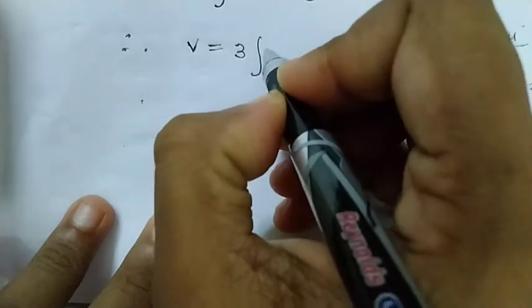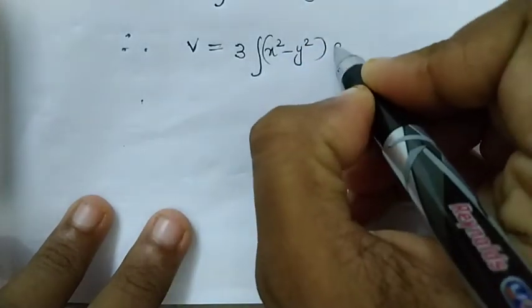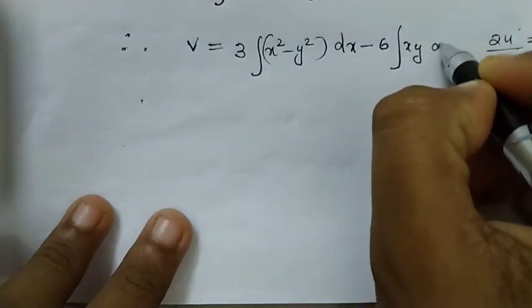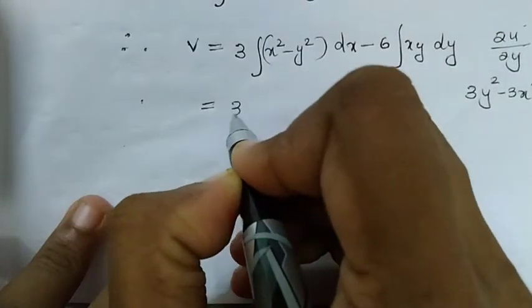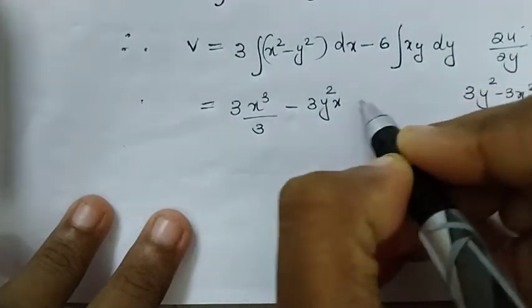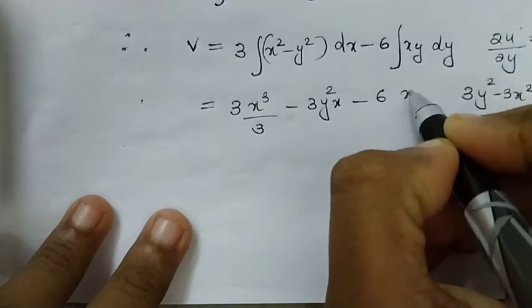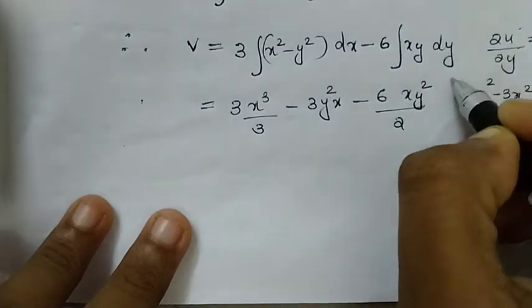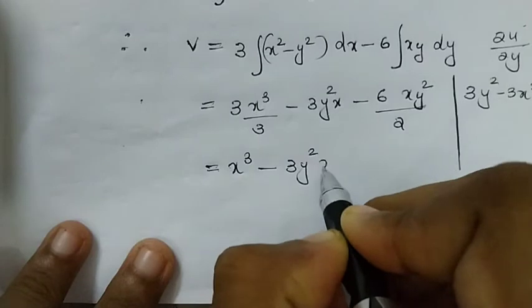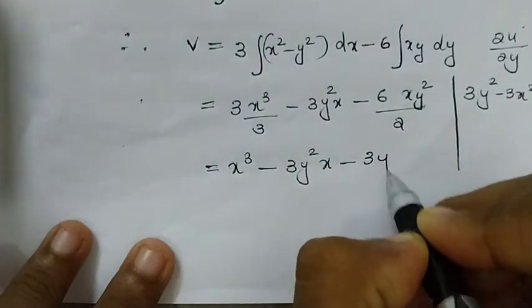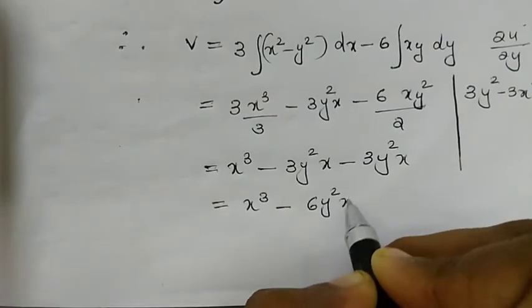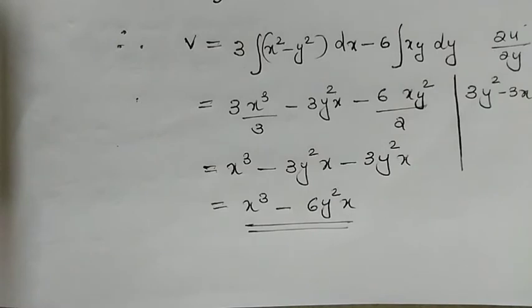v = 3·integral[(x² − y²)dx] − 6·integral[xy dy] = 3(x³/3) − 3y²x − 6·(xy²/2) = x³ − 3y²x − 3xy². That is equal to x³ − 6y²x, which is the required conjugate function.